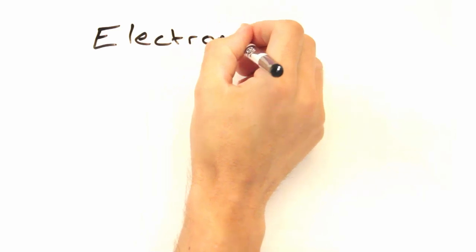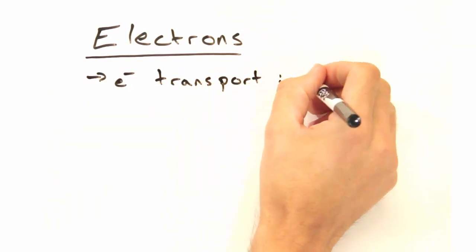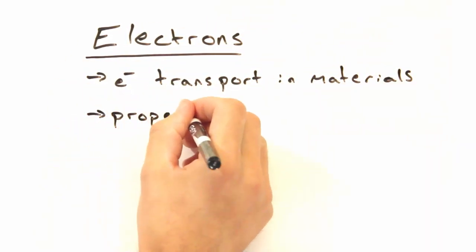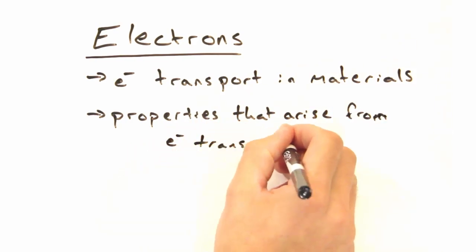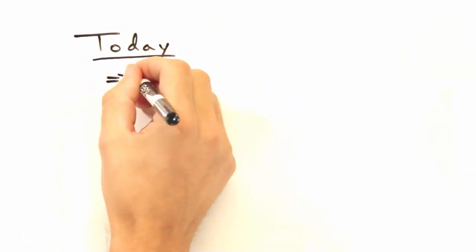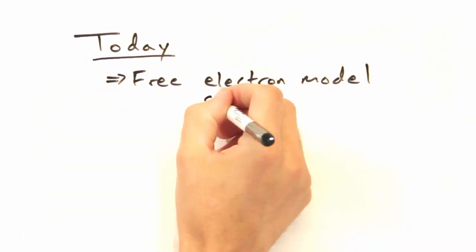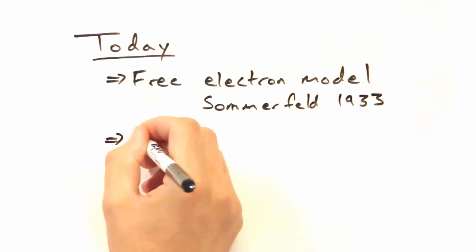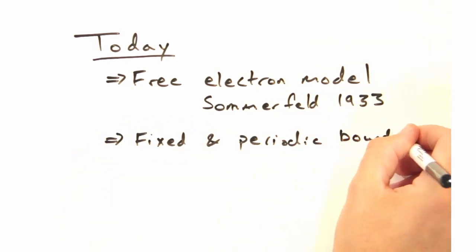Now that we're finally done with phonons, time to move on to my favorite portion of the course, electrons. Over the rest of the semester, we'll look at electron transport in materials, different properties that arise from that, and near the end, touch on some electronic and optical devices. But for today, we're going to start with the free electron model, developed by Summerfield in 1933, and then look at fixed and periodic boundary conditions.